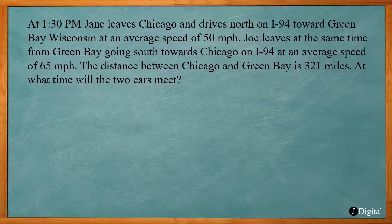This is our third ACT math problem. At 1:30 PM, Jane leaves Chicago and drives north on I-94 towards Green Bay, Wisconsin at an average speed of 50 miles per hour. Joe leaves at the same time from Green Bay going south towards Chicago on I-94 at an average speed of 65 miles per hour. The distance between Chicago and Green Bay is 321 miles. At what time will the two cars meet?